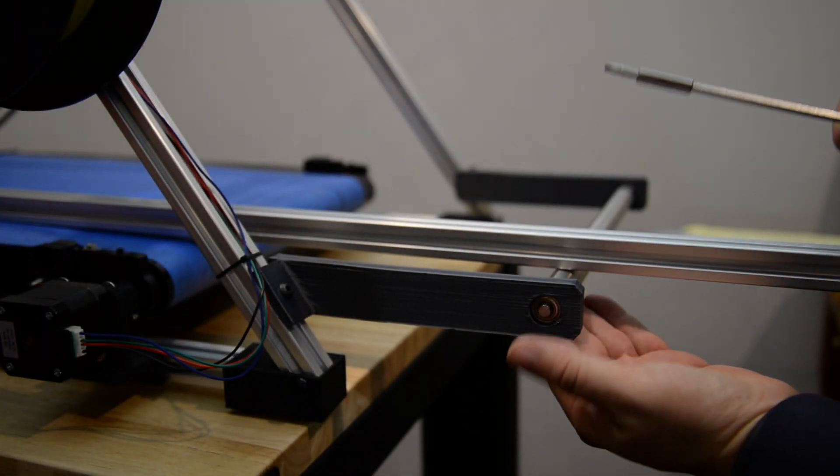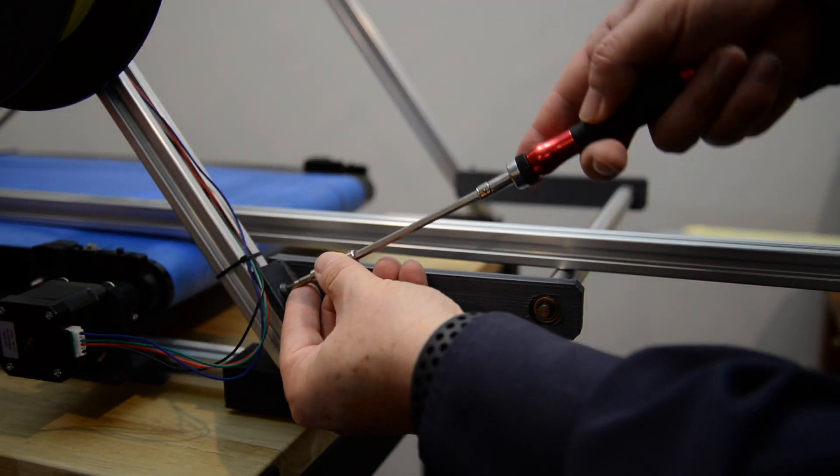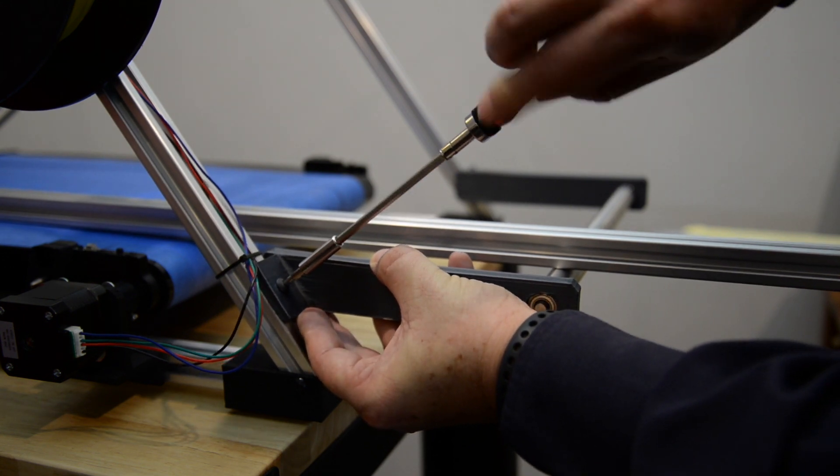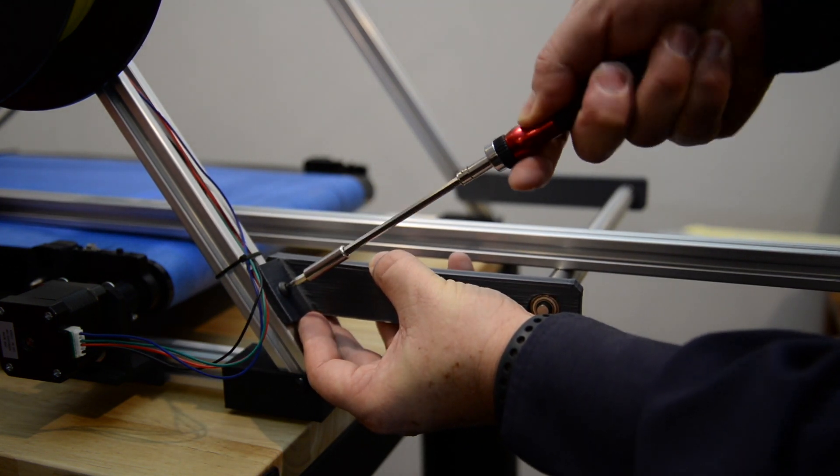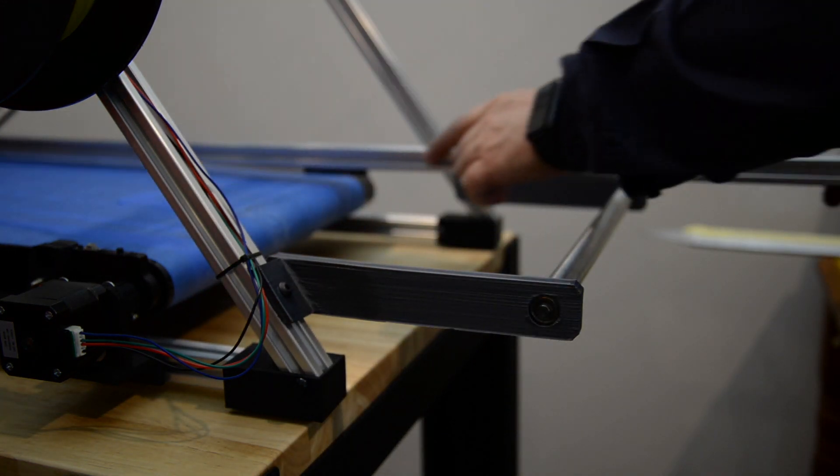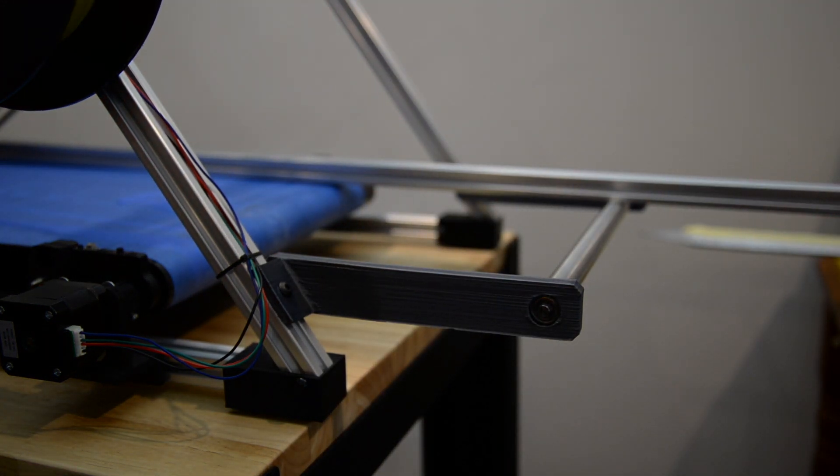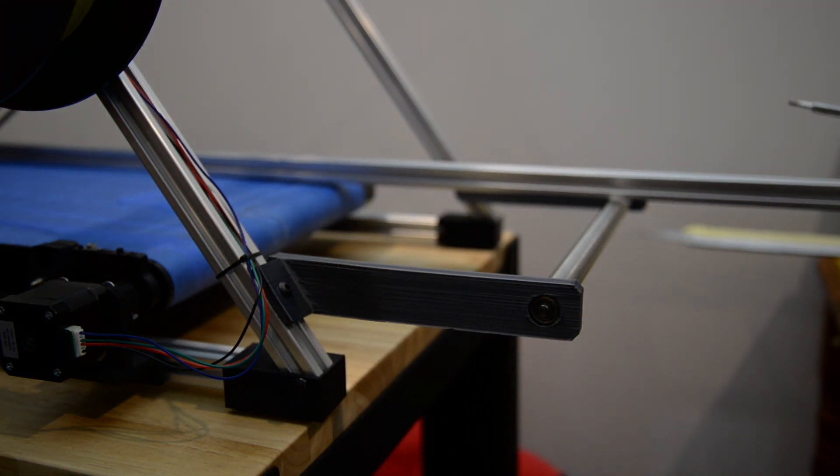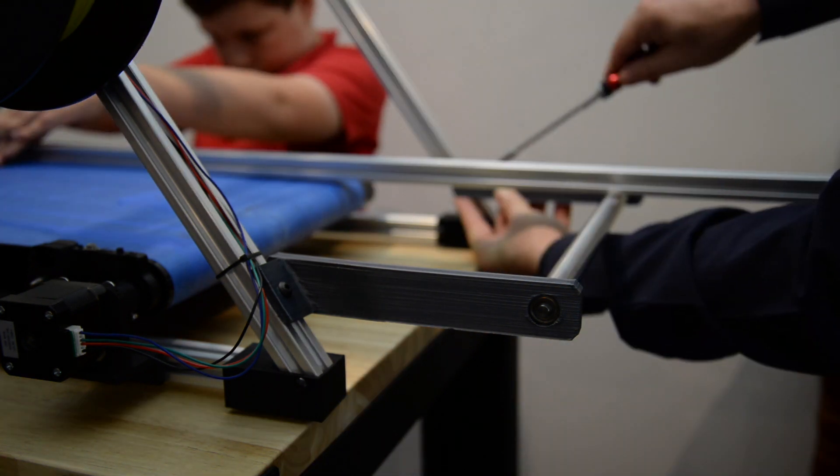I used an aluminum extrusion to line up the roller with the mirror. I had an assistant hold the aluminum extrusion flat on the mirror and then I just simply on both sides moved the roller mount up and down.